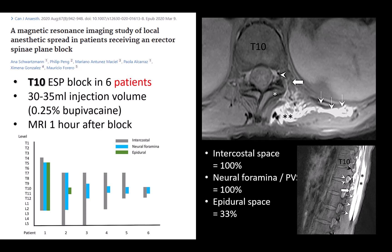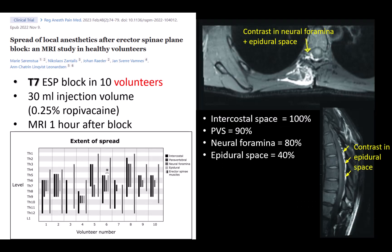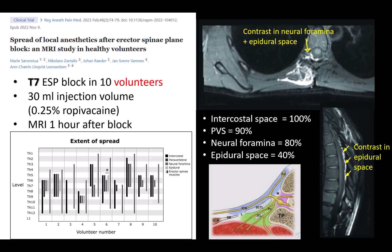Anna Schwarzman and colleagues were among the first to conclusively demonstrate with MRI imaging that the ESP block does indeed result in physical injectate spread to the paravertebral space and even the epidural space. They injected 30 mls of 0.25% bupivacaine at T10 in six patients, and notably all their patients had complete resolution of their chronic abdominal pelvic pain 30 minutes after the ESP block. This 2023 study by Soren Stewart and colleagues confirms this spread pattern — also injecting 30 mls of 0.25% bupivacaine with contrast in 10 volunteers at T7 — confirming that local anesthetic injected into the ESP plane reaches the intercostal space, the paravertebral space, and the neural foramen, thus surrounding and acting on the neural structures within these spaces.